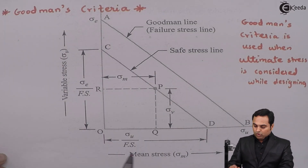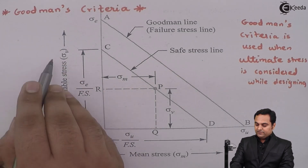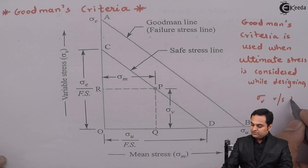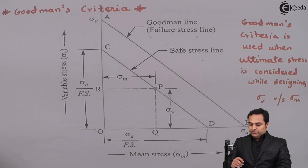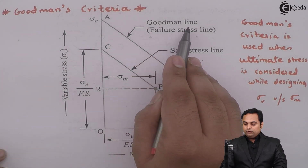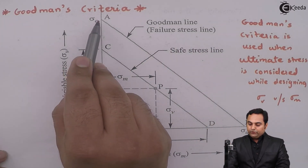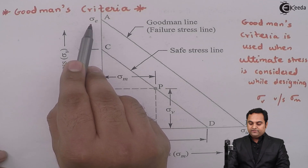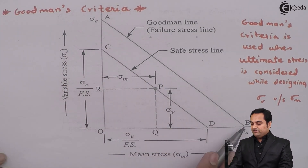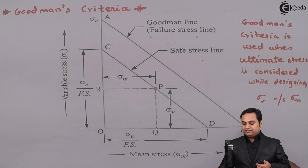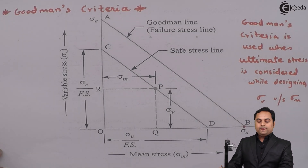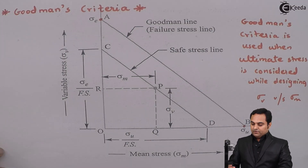Goodman's criteria is basically a graph of variable stresses on the y-axis versus mean stress on the x-axis. The line joining point A to point B is called the Goodman line, or also called the failure stress line. At point A we have Sigma E, which is called endurance stress, and at point B we have Sigma U, called ultimate stress. Joining them gives us the Goodman line, and since ultimate stress is the maximum value, this line ends only on Sigma U and Sigma E.